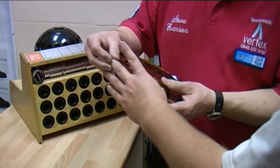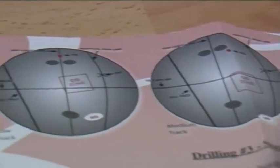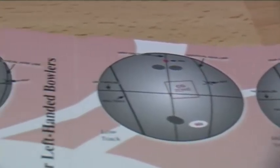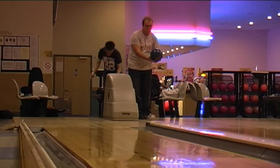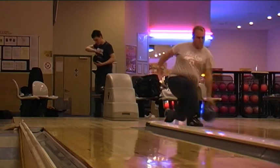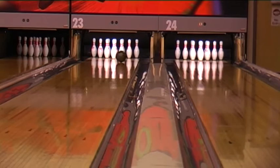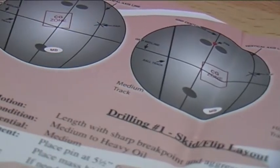A driller will look at the hand, work out the pitches, work everything out, look at the bowler themselves and work out how they bowl and where their positive axis point is. And they'll measure the ball accordingly.